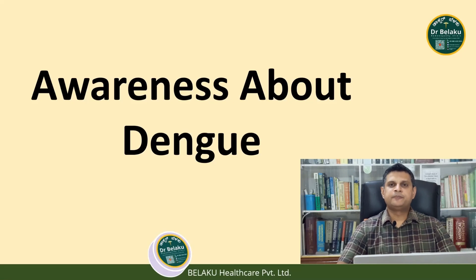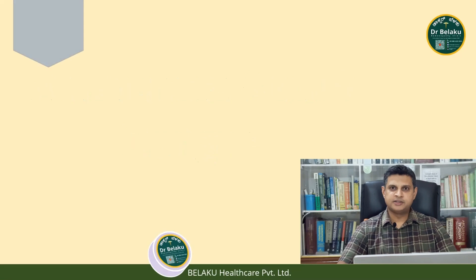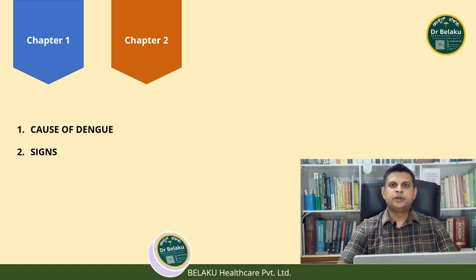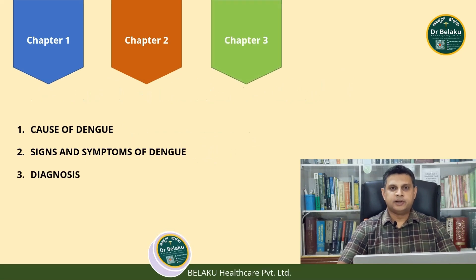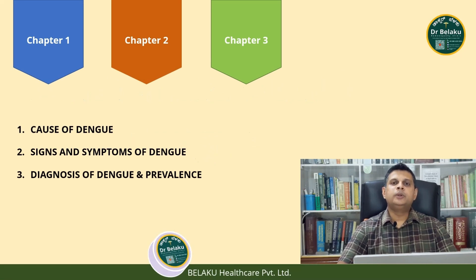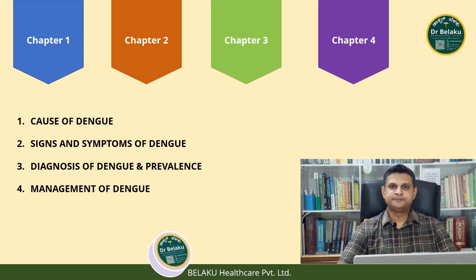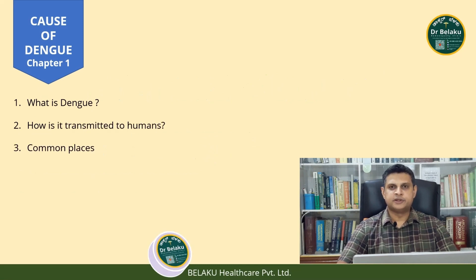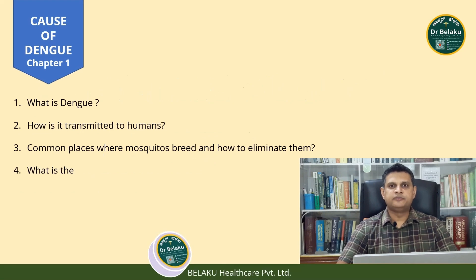For everybody's convenience, we have divided this video on dengue into 4 parts. Chapter 1 tells you about the cause of the disease. Chapter 2 covers the signs and symptoms. In chapter 3 you will learn about diagnosis and the prevalence of dengue in India and worldwide. And in chapter 4 you will learn about the management of the disease. So let's start with chapter 1, where you will understand what is dengue, how it is transmitted, what are the common breeding grounds of mosquitoes and how to eliminate them, and what is the incubation period of dengue in human beings.